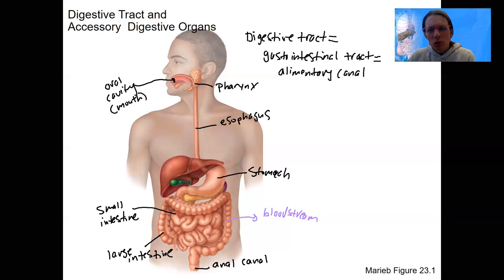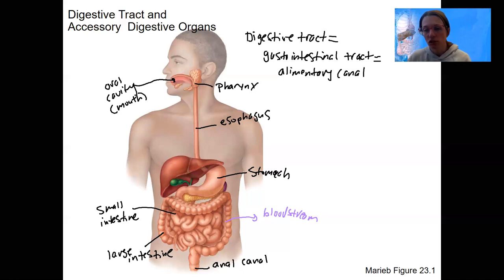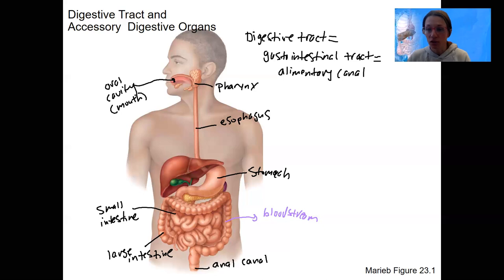We'll talk more about this tube, but it's basically muscular along the whole way, along with the epithelial. And that's going to be important for movement — we've got to get food to move down this whole thing. Some other features of this whole tube and the similarities between these different parts of the tube will be important.